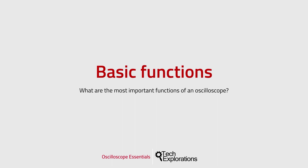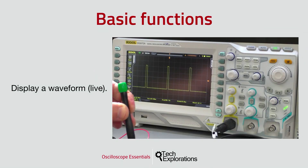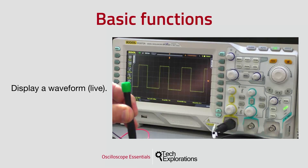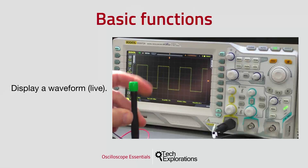Let's have a closer look at the basic functions of a digital oscilloscope. The first and most important function is to display a signal live on its screen. As the signal changes, the oscilloscope updates its display in close real-time. In this example, I'm changing the duty cycle of a PWM signal using a potentiometer, and the oscilloscope is able to show the signal as it changes on the screen.